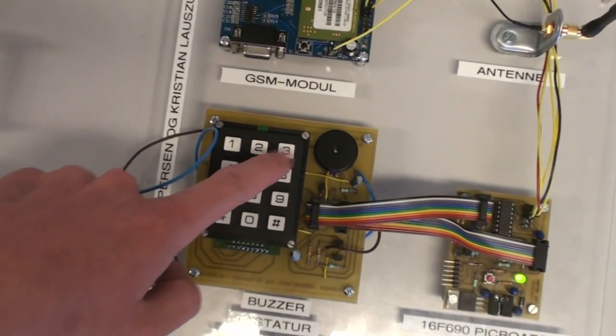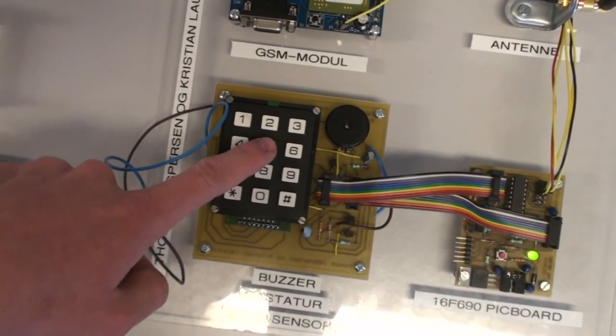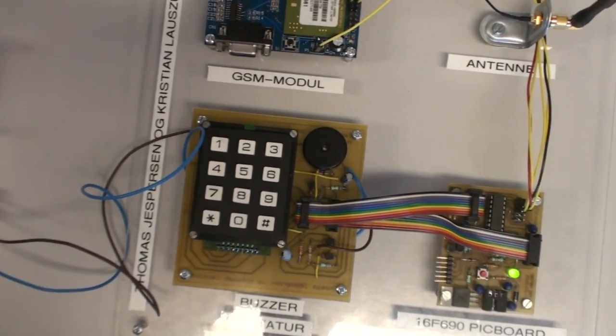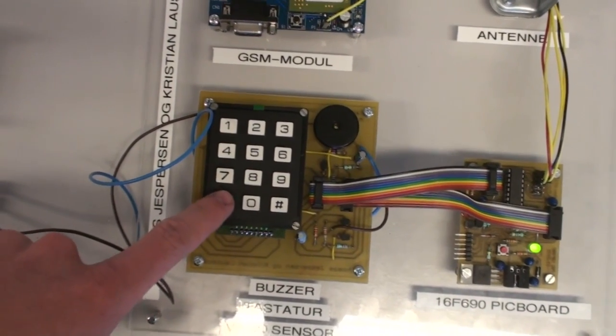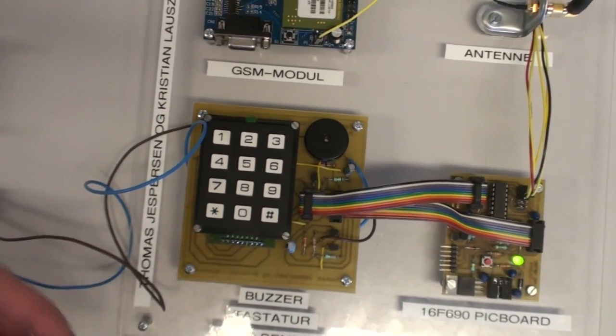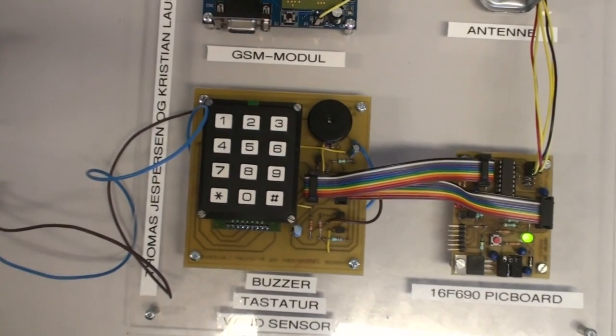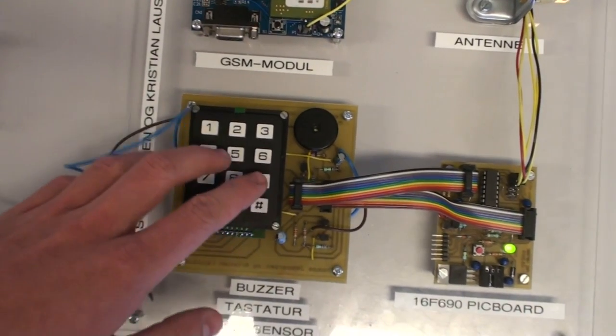When pressing the keypad the buzzer beeps to make some feedback for the user. And if we press star and then square we can type in the telephone number to be used for alarm.